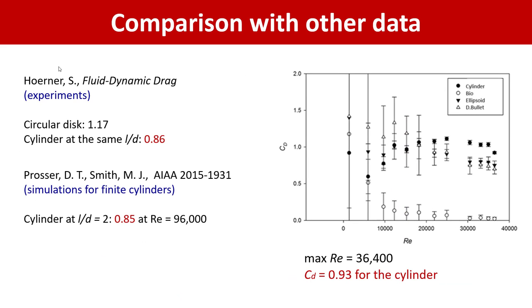So it brings the question: how much can we trust our experimental data? This type of design is not investigated in detail so not much data are available. For example, we have for comparison experimental data from the famous fluid dynamics drag book by Hoerner which gave circular disk drag coefficient of 1.17, and for cylinder with close length to diameter ratio this value is 0.86. Another set of data available is from simulations, recent simulations for finite cylinders at different yaw angles.